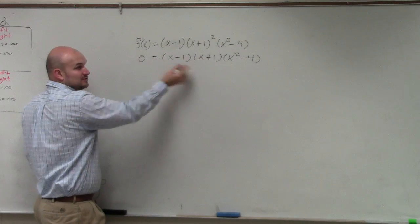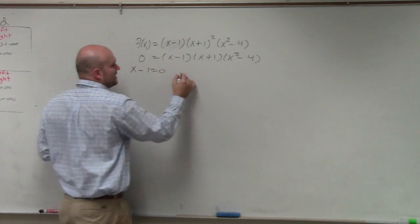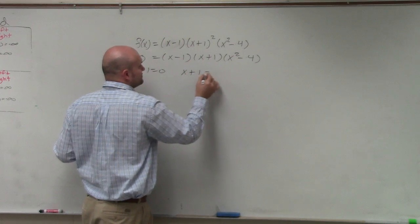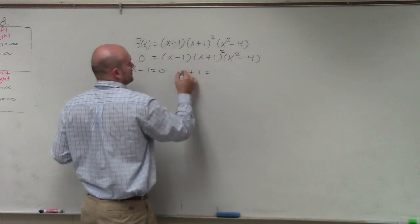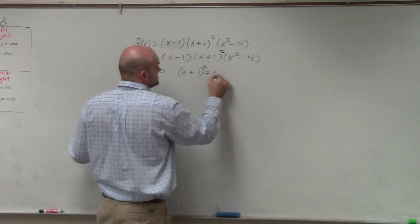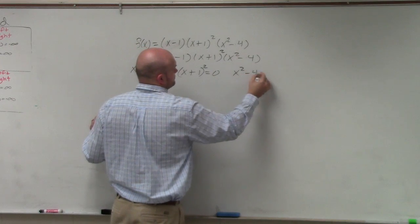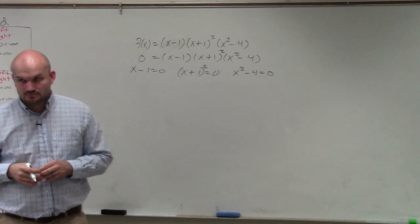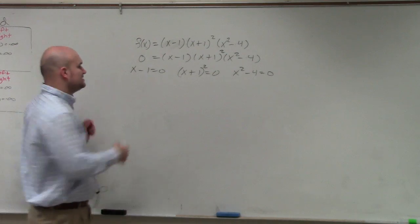Then, since we have factored form set equal to 0, we could apply the zero product property and set each factor equal to 0. Would everybody agree with me? Yes? Then we could go ahead and solve.